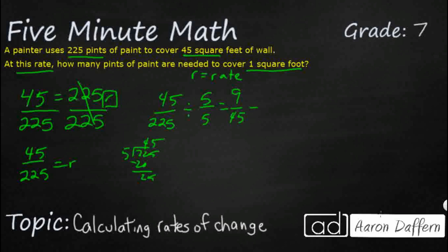255. Okay, 9 45ths. Well, both of those can be divided by nine, right? So let's just divide by nine. And we are going to go ahead and say that is one fifth.